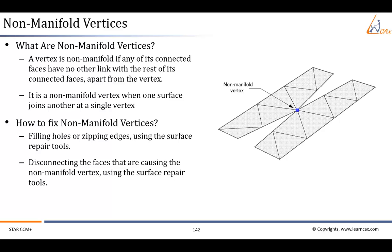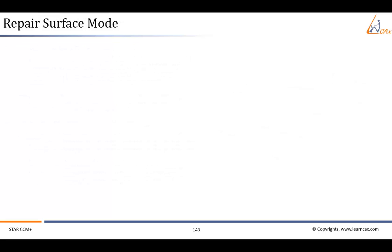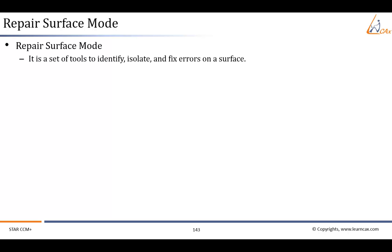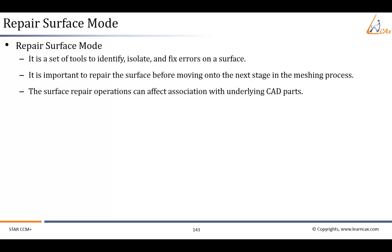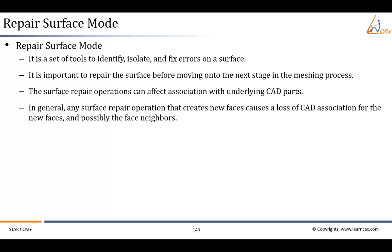Now that we have seen different types of errors and problems with surfaces, we will shift our attention to the process of fixing them. Among the first methods to fix problems with surfaces is the manual surface repair mode, available in the surface preparation tool. The manual surface repair mode is used to identify, isolate, and fix errors on a surface. It is important to repair the surface before moving on to the next stage in the meshing process. Surface repair operations can affect association with underlying CAD parts; any surface repair operation that creates new faces causes a loss of CAD association for the new faces and possibly their neighbors. Therefore, if CAD association is important, keep surface repair to a minimum.